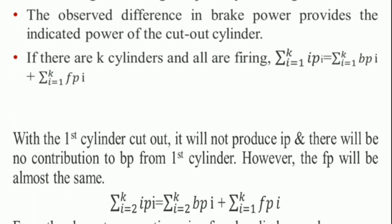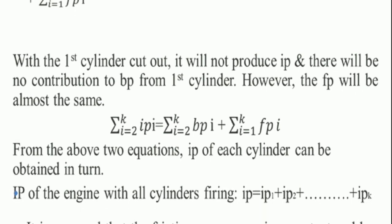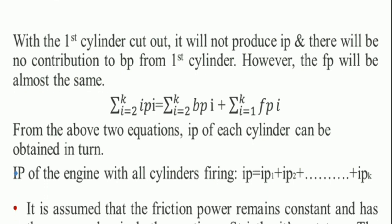With the first cylinder cut out, it will not produce IP and there will be no contribution to BP from the first cylinder; however, the FP will be almost the same. A similar equation applies where i equals 2 for IP_i and BP_i, with i equals 1 remaining for FP_i. From these two equations, the IP of each cylinder can be obtained in turn. The total IP of the engine with all cylinders firing equals IP1 plus IP2 plus ... plus IP_k.